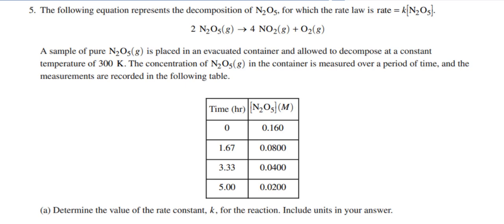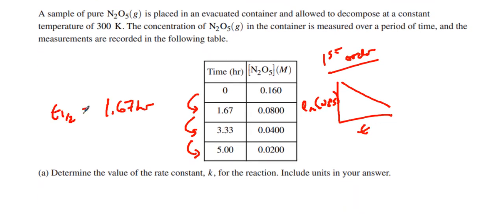It starts off as a kinetics question, and the first thing you can see is the rate law is rate equals k times the concentration of N2O5 to the first power, which means it is a first-order reaction. If I did natural log of N2O5 versus time, it would be a linear slope with the slope equaling k. You can also see it's first-order because the half-life is staying consistent. The half-life is about 1.67 hours.